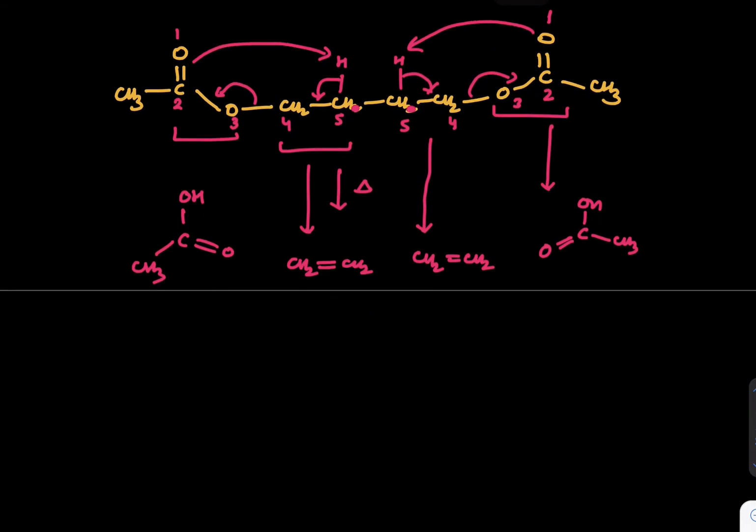I will pick one more example where I'm taking a six-membered ring like this. And on this ring, I'm putting groups like O, C double bond O, CH3, and similarly O, C double bond O, CH3. And then the pyrolysis is given.